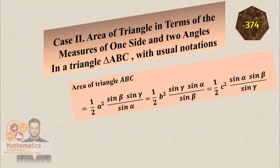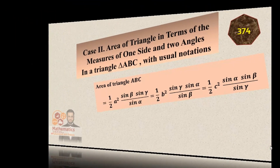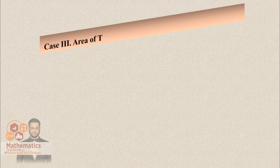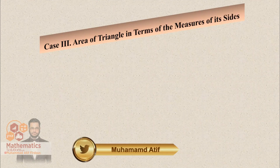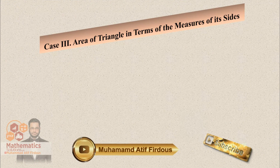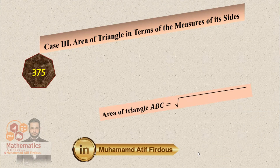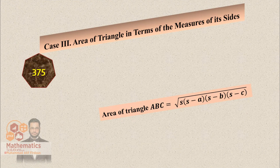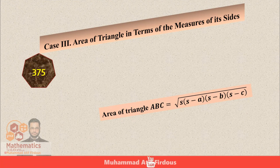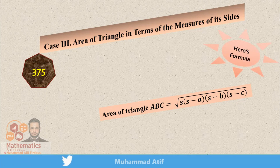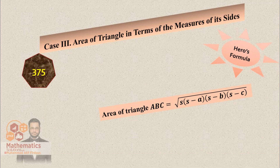Now let's go to page 374 and 375. The second famous formula is in terms of the measurements of its sides. If we know all three sides, we can use: delta equals the square root of s(s−a)(s−b)(s−c), where s equals (a+b+c)/2. If you remember this, it is Heron's formula. You can see the proof of this formula in my other video.